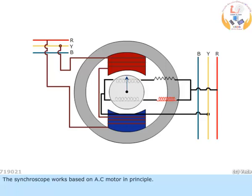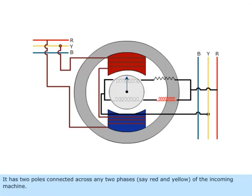The synchroscope works based on AC motor in principle. It has two poles connected across any two phases, say red and yellow, of the incoming machine.